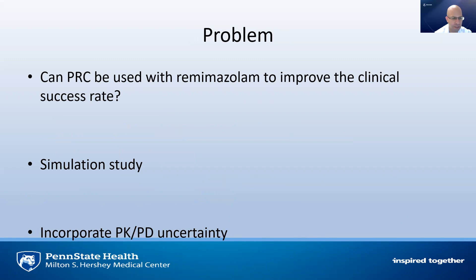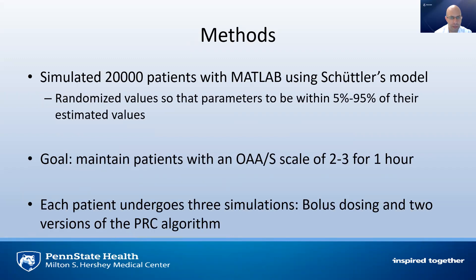We've been doing this through a simulation study, incorporating pharmacokinetic and pharmacodynamic uncertainty. From a methods standpoint, we simulated 20,000 patients using MATLAB and the Shuttler model. We randomized the parameters to be within 5 to 95% of their estimated values. The goal was to maintain the patient in moderate sedation — an OAAS scale score of 2 to 3 — for about an hour. Each patient would undergo three different simulations: bolus dosing and two different versions of the PRC algorithm.